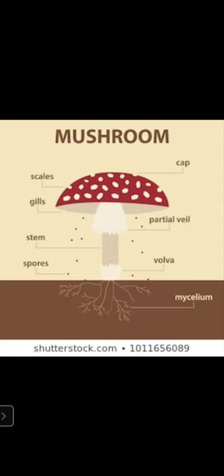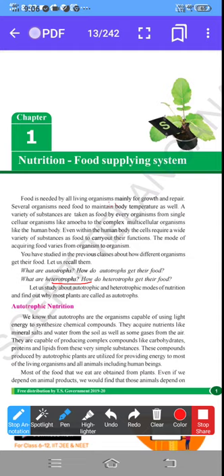Similarly, bread mold also depends upon other sources for acquiring nutrients. Mushroom is not an autotroph but a heterotroph. Except plants, all other organisms — whether fungi, algae, invertebrates, vertebrates, protozoans, or mammals — come under the category of heterotrophs. Those which depend upon other organisms or sources for food are called heterotrophs. The next paragraph is about autotrophic nutrition.